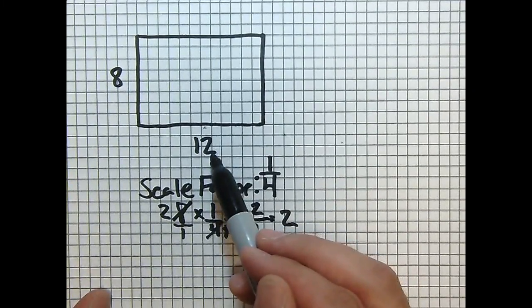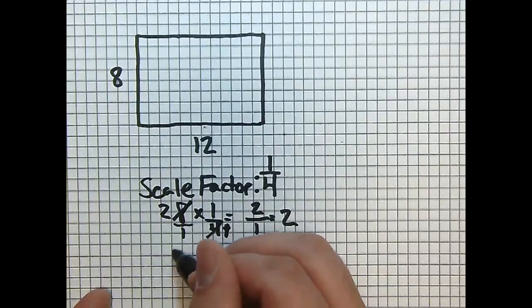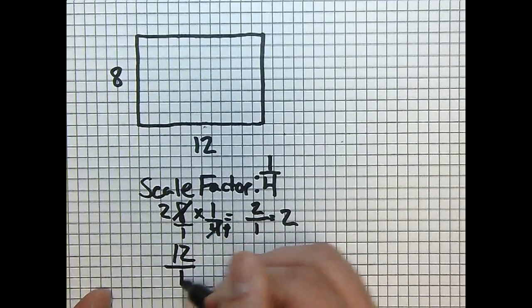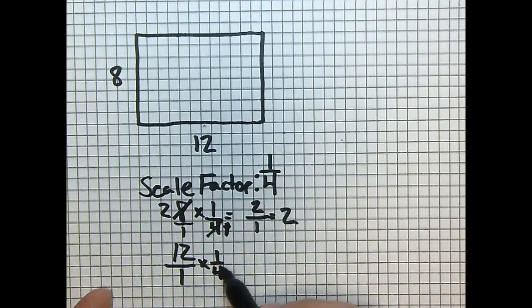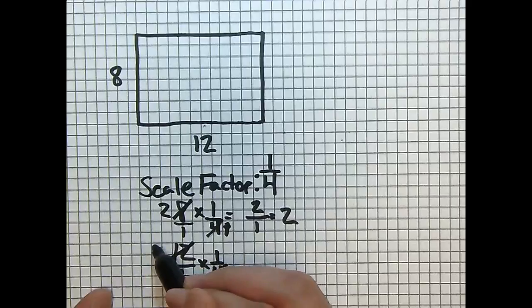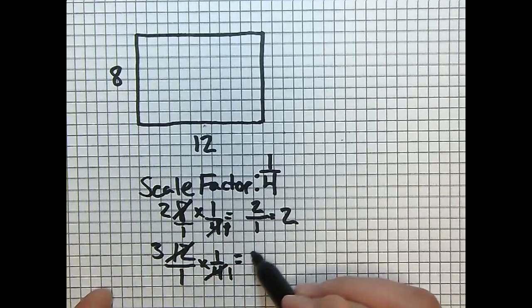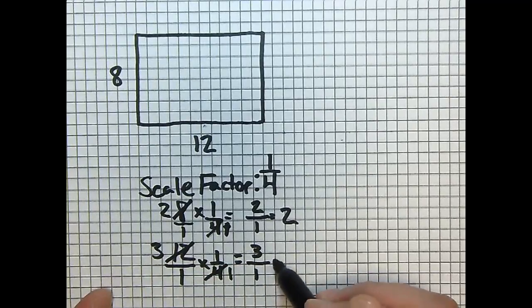Let's go ahead and take a look at our 12 unit side. 12 over 1 times 1 fourth. 4 goes into 4 once, goes into 12 three times. You get 3 over 1, which is just 3.